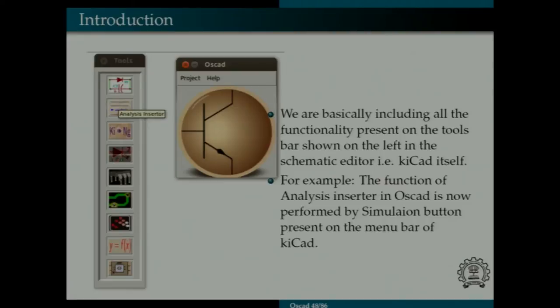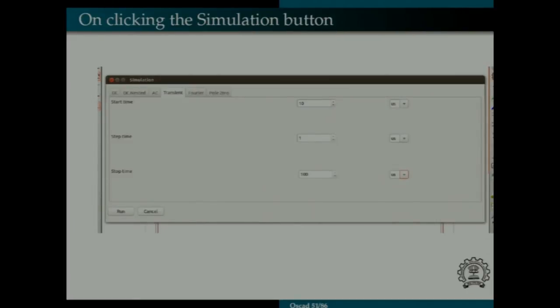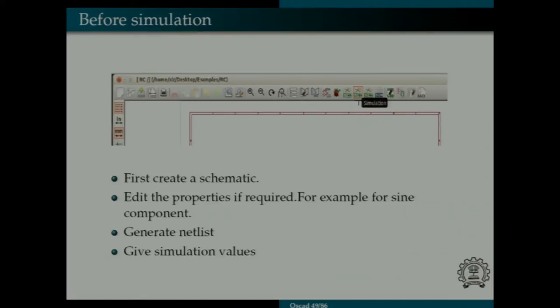For example the second button is the analysis inserter. What I have done is I implemented this button inside the e-schema window. As you can see the above toolbar is the main toolbar of the e-schema editor of KICAD. The analysis inserter, the button which was present on the toolbar earlier on OSCAD is now present on this window. So the earlier GUI, this GUI is supposed to pop up when we click on the simulation button. It has five options, DC, DC nested, AC, transient and Fourier and pole zero plot. These options, this GUI was first created in Python which was included in OSCAD. Now we have recreated this using C++ because KICAD backend language is C++. So we recreated this GUI. Now it's present on the KICAD e-schema window.